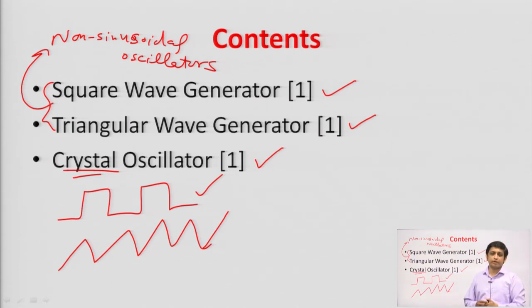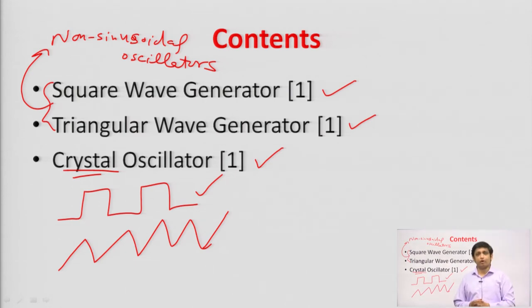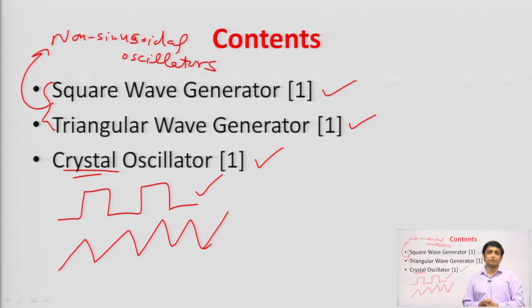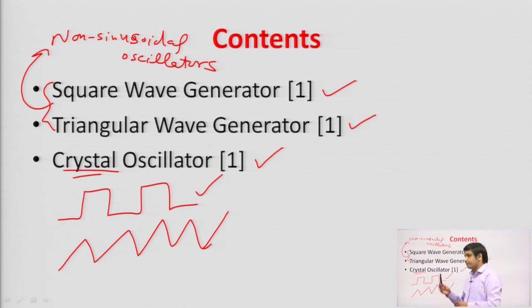Because there we need a clock pulse, which is the square waveform. In sequential circuits like flip-flops, shift registers, and counters, we need a clock signal. That clock signal is your square wave.